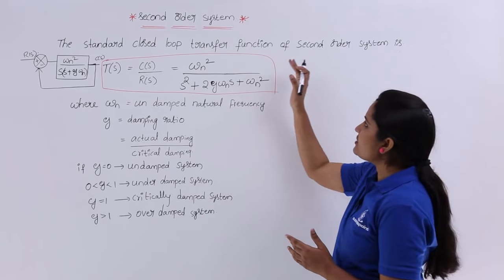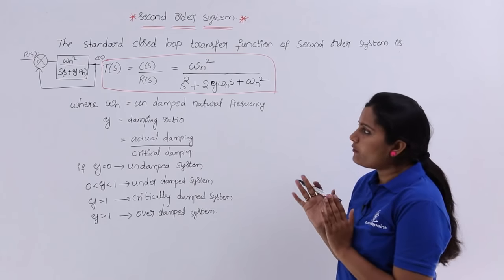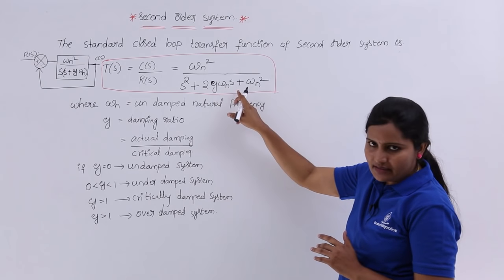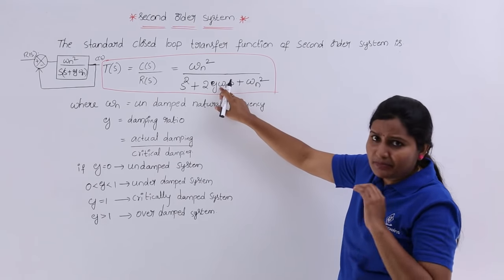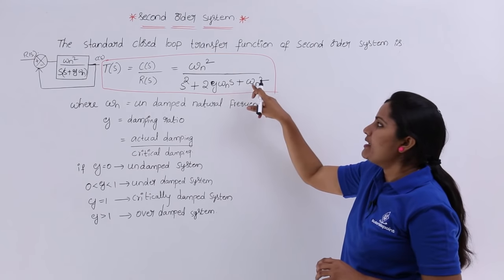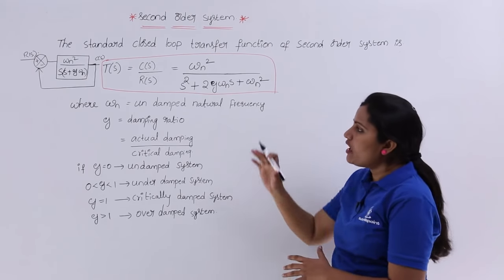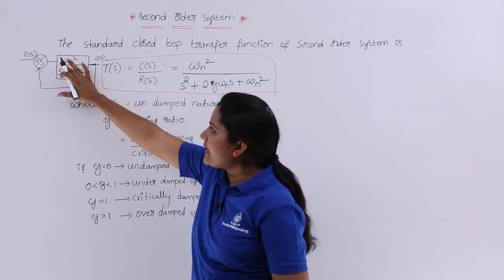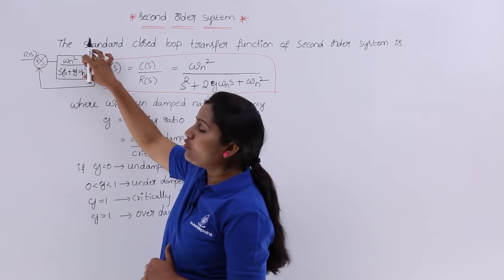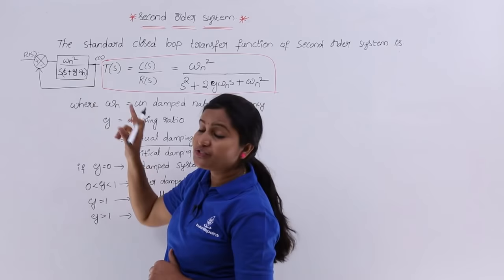The standard closed loop transfer function of a second order system is: omega_n squared divided by s squared plus 2 zeta omega_n s plus omega_n squared. This is the general transfer function of the second order system. The basic block diagram shows the open loop gain in terms of second order system is omega_n squared divided by s into s plus 2 zeta omega_n.